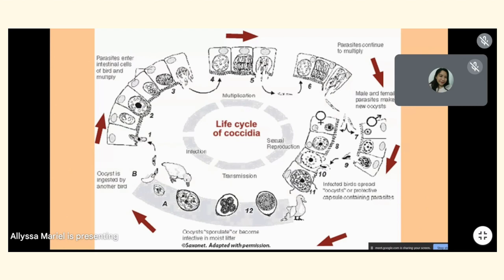The life cycle starts when the oocyst is ingested by a bird. The parasites enter the intestinal cells of the bird and multiply. The parasites continue to multiply until female and male parasites make new oocysts. The infected birds spread oocysts — a protective capsule containing the parasites — shedding them in their feces.